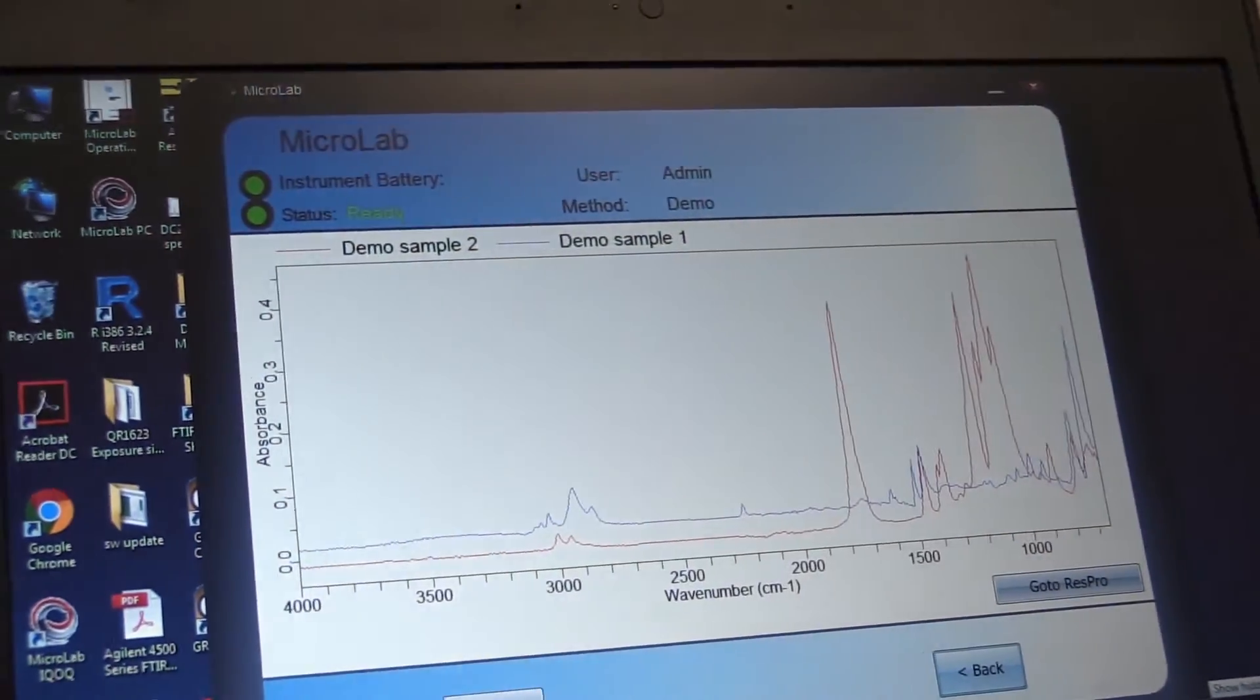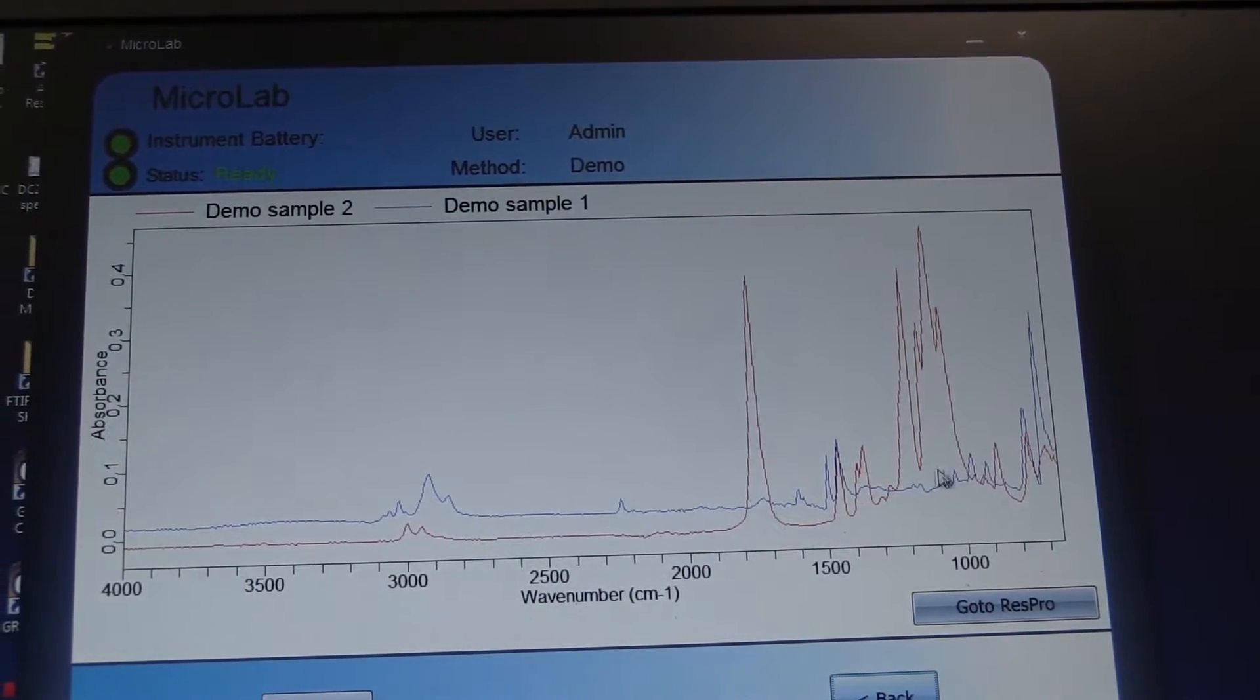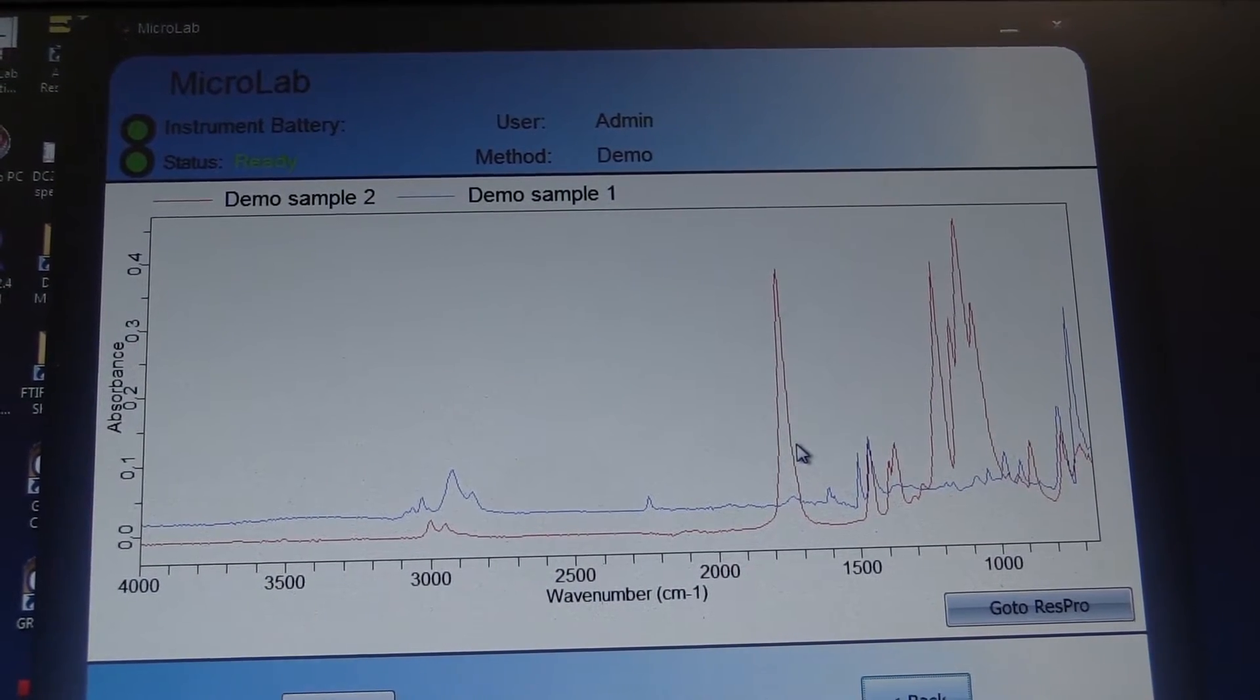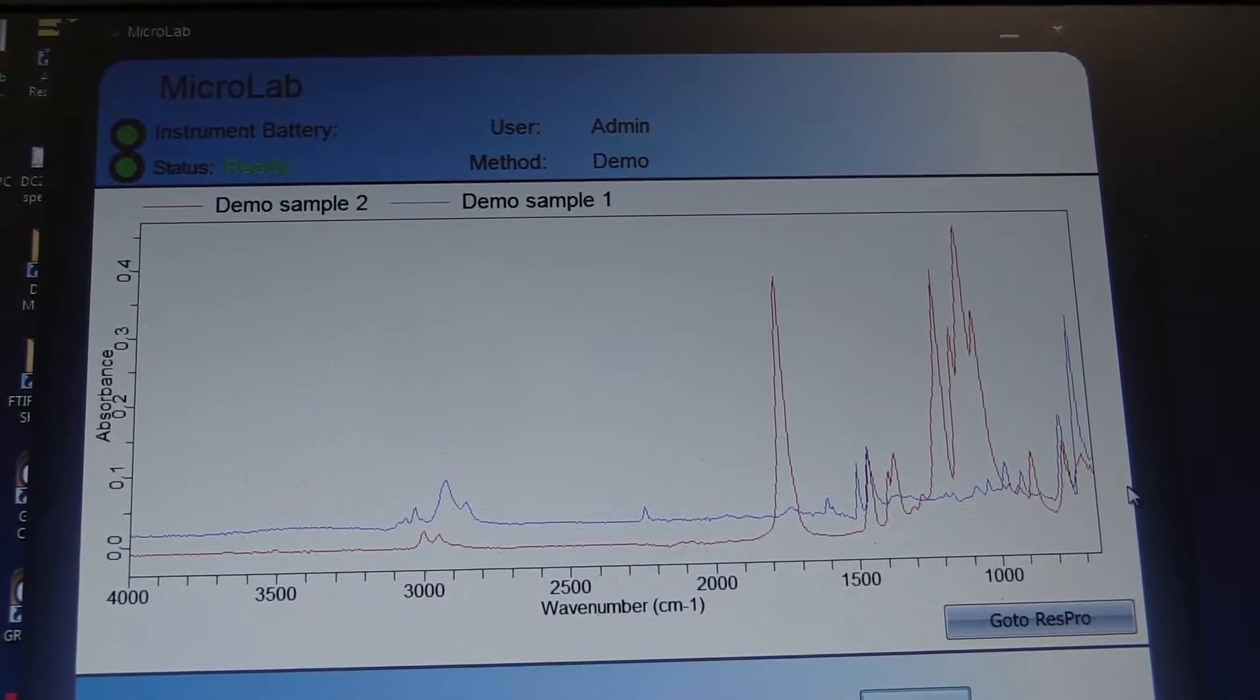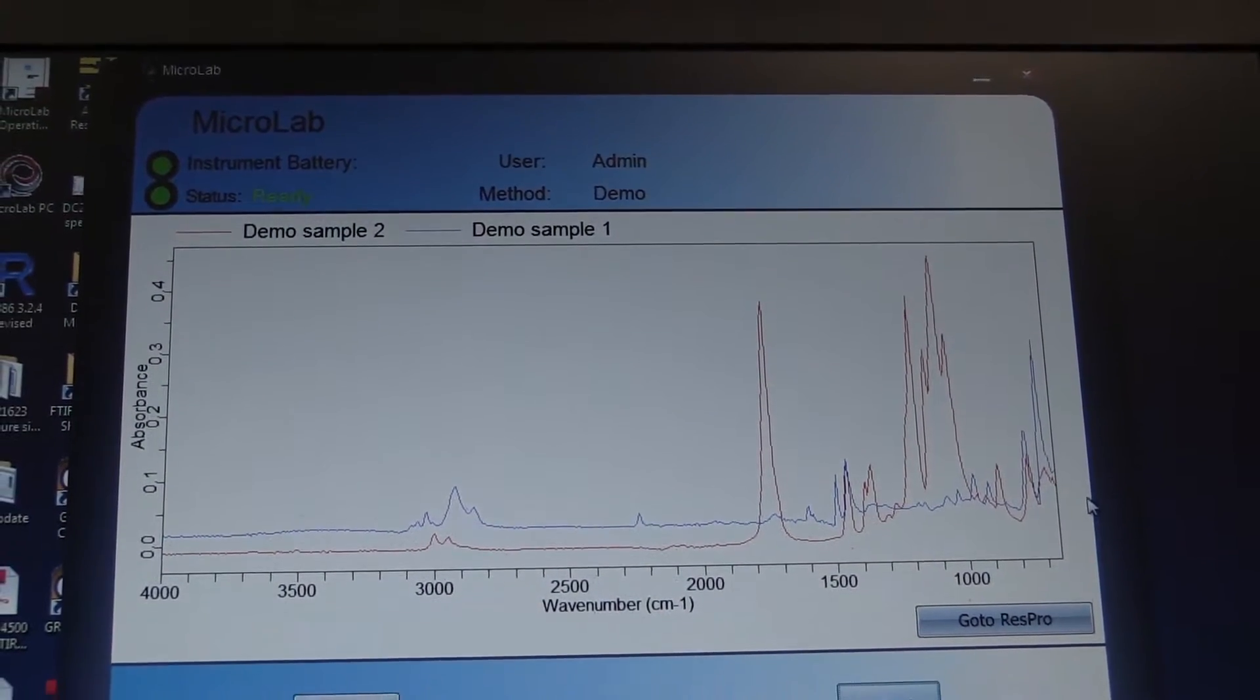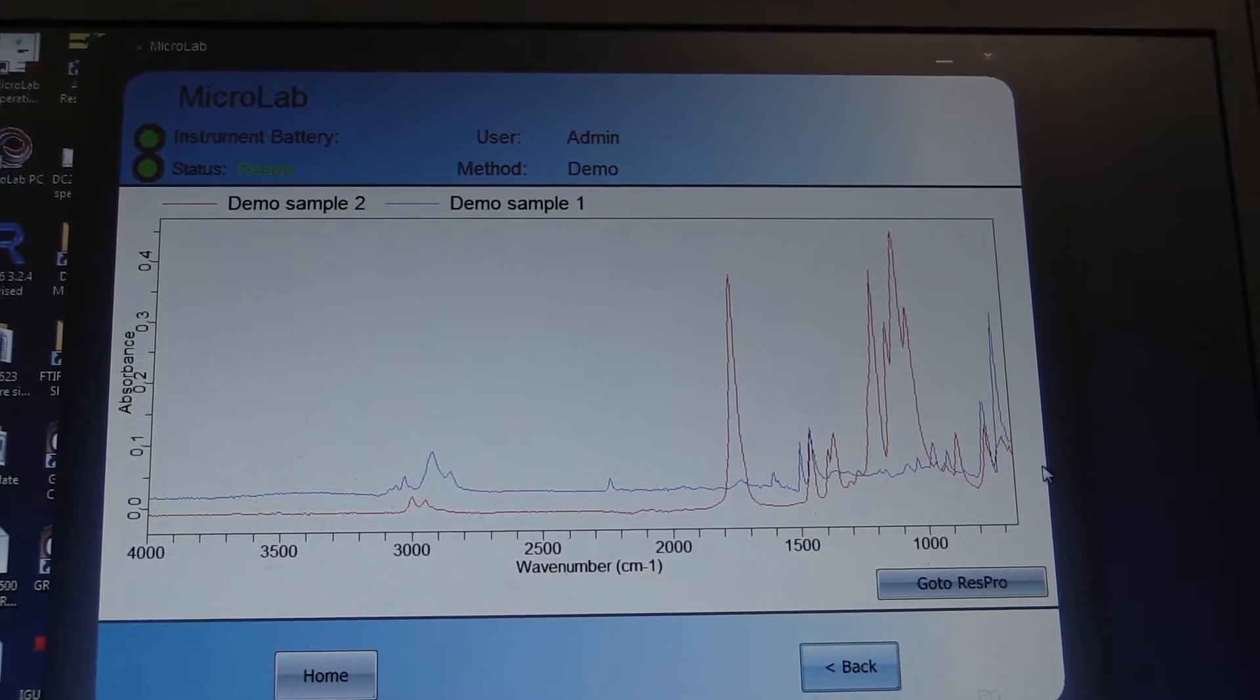We can see that the blue line from sample one is completely different to the lines representing sample two, the red lines, which tells us that their chemical compositions are completely different and they are two completely different products. So the manufacturer who was concerned about product substitution was actually correct. It was not the product that was being specified.